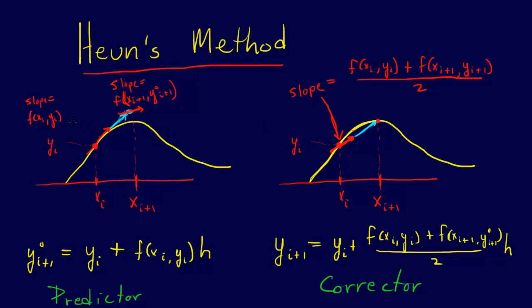And to start out with, Heun's method comes up with a slope the same way as Euler's method does. It takes the value, it estimates the value, y_i+1 is equal to y_i plus f(x_i, y_i) times h.